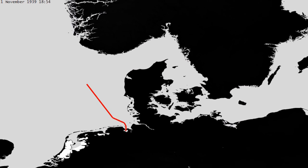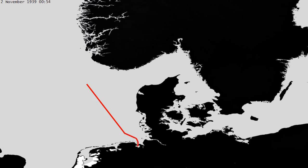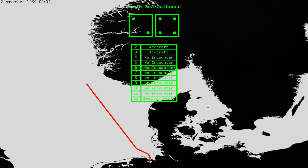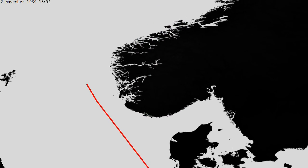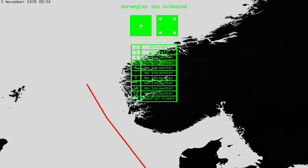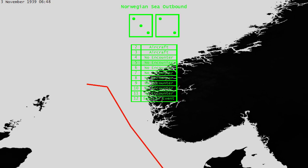Captain Kramer takes the opportunity of crossing the North Sea to drill his men on crash diving the submarine. Our transit across the North Sea goes without incident. With Scapa Flow now a riled bee's nest, we swing well north of the Shetland Islands.